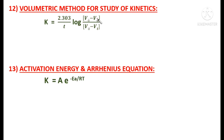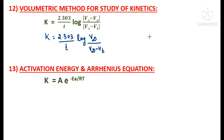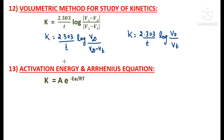If V₀ is not given, use: k = (2.303/t) log[(V∞ − Vt)/(V∞ − Vt)] directly with available values. If V∞ is not given, use: k = (2.303/t) log(V₀/Vt). These are the formulas to find the rate constant for a first order reaction when volumes of reagents are given.